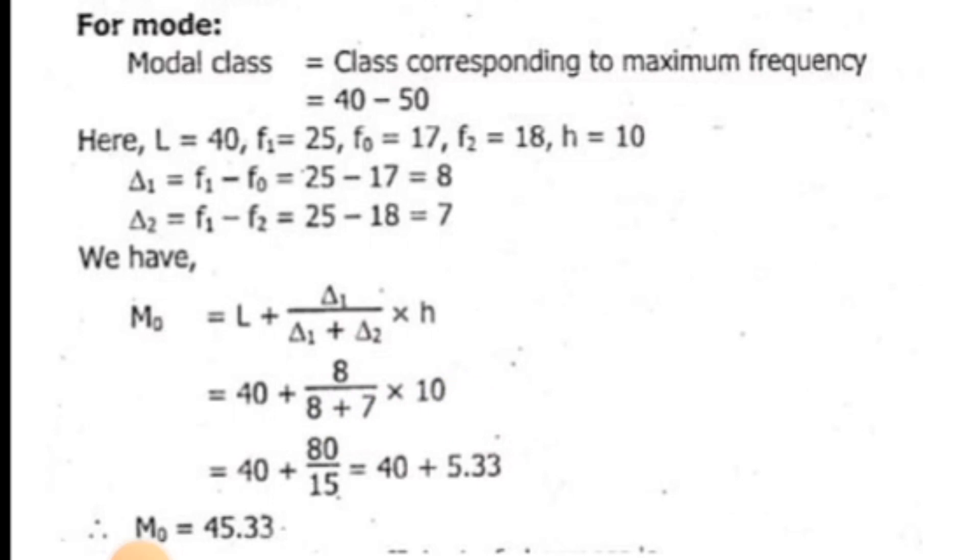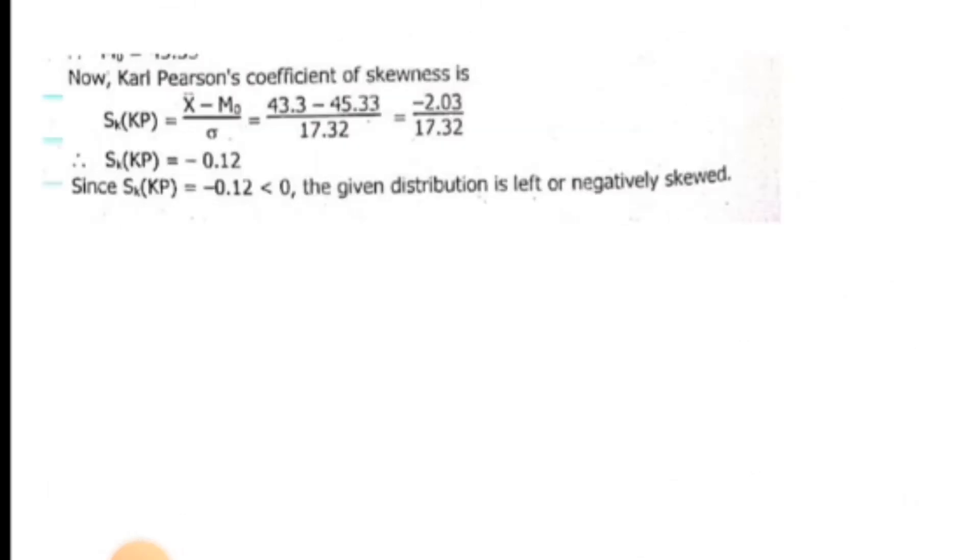Now calculating the coefficient of skewness: mean minus mode upon standard deviation equals 43.3 minus 45.33 upon 17.32. The Karl Pearson's coefficient of skewness is negative. Therefore, the distribution is left or negatively skewed. This is the solution to question number 11. Thank you very much.